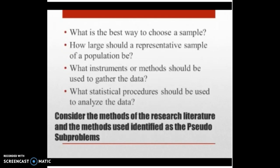Let's consider the pseudo-sub-problems of the research topic. This involves the methods of the research problem. For the literature review, pay attention to the way the research sample was chosen — the sample includes the participants and how they were selected. Furthermore, how large was the representing sample of the research population? What instruments or methods were used to gather data? What statistical procedures were used to analyze the data? The review of the literature, the problem, the sub-problem, and the methods imposed can be assistive in your research design.